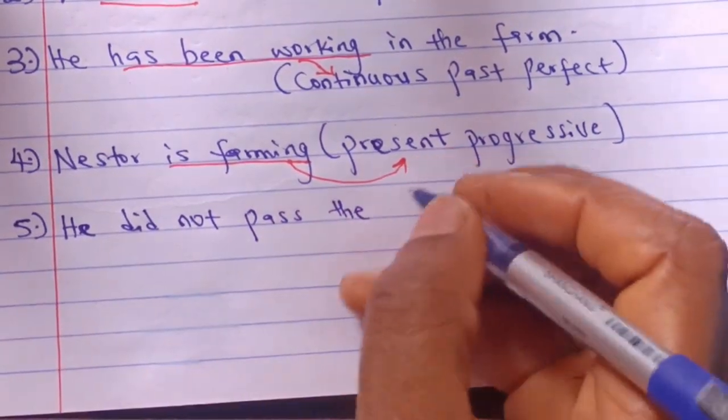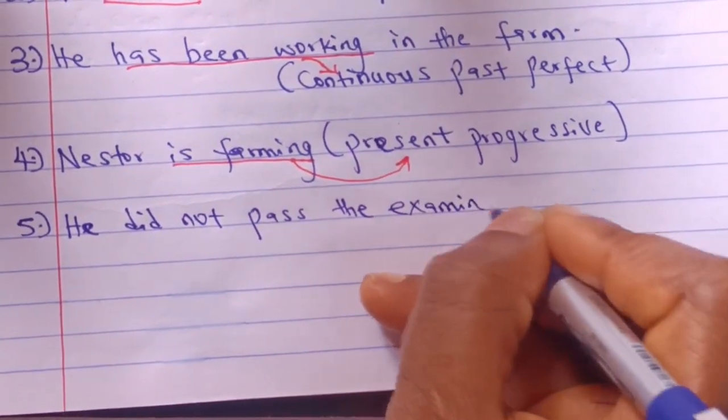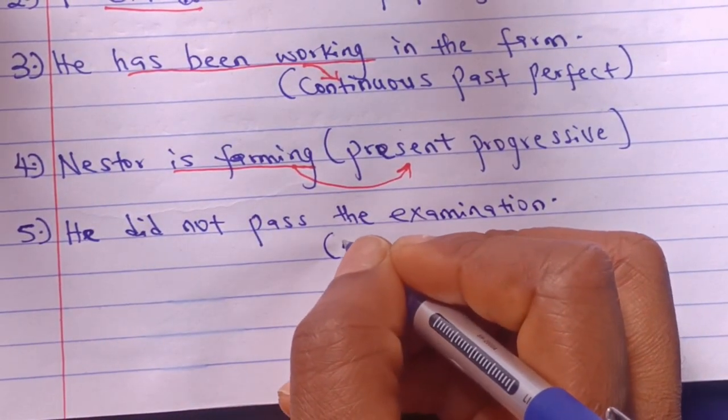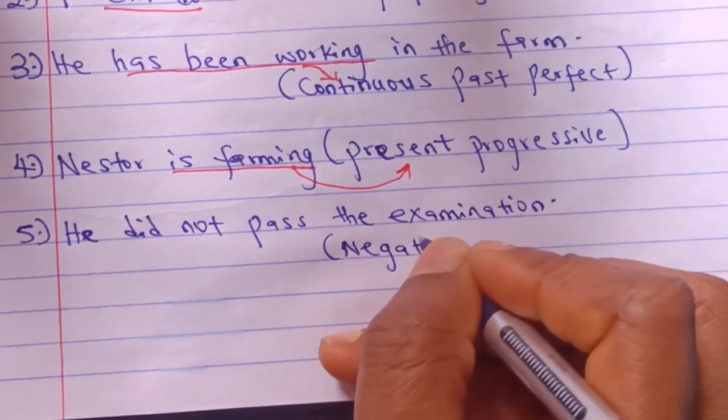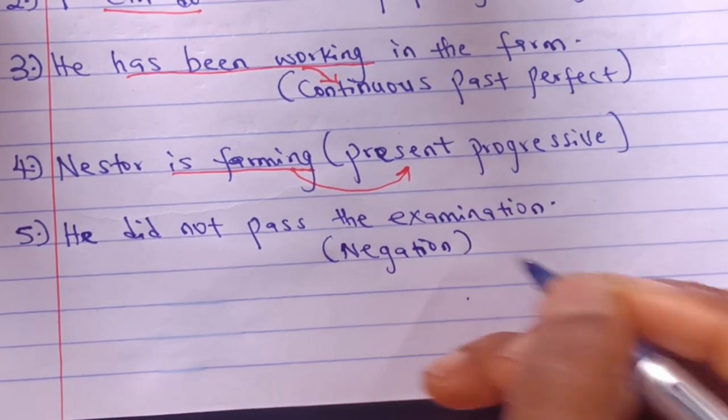Number five: He did not pass the examination. The verb phrase here is did not and it shows negation.